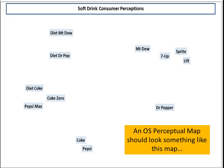Basically, this is what a perceptual map of this variety should look like. As you can see, there are only brands listed and scattered around the map.